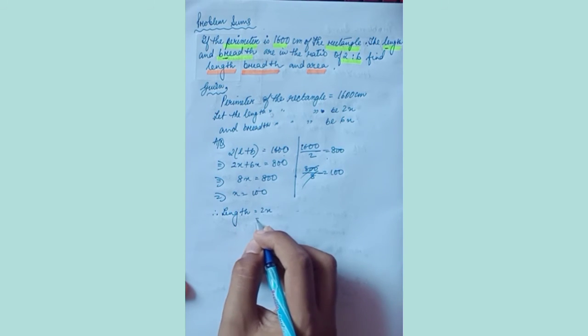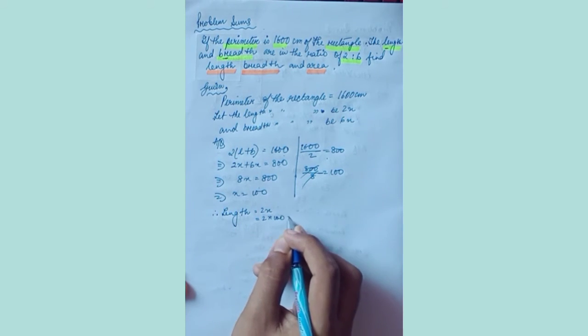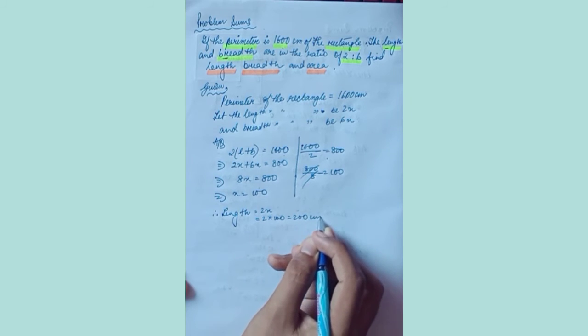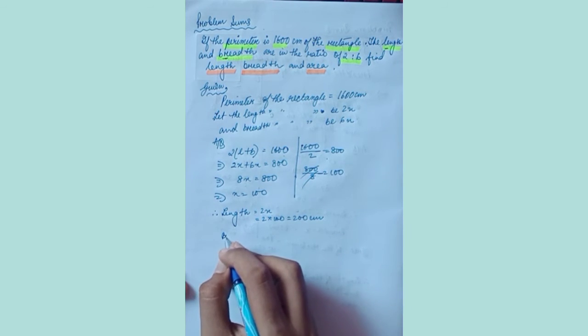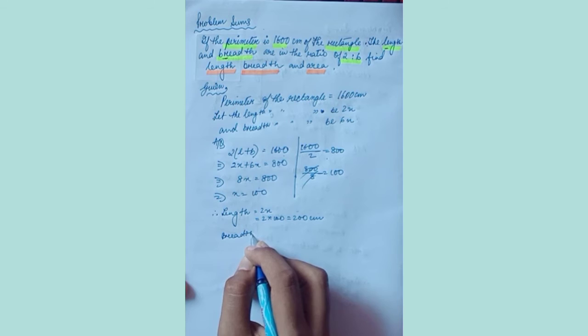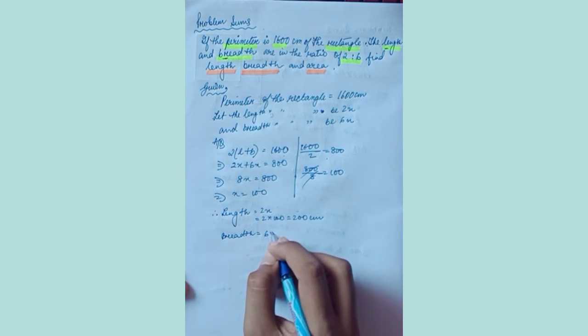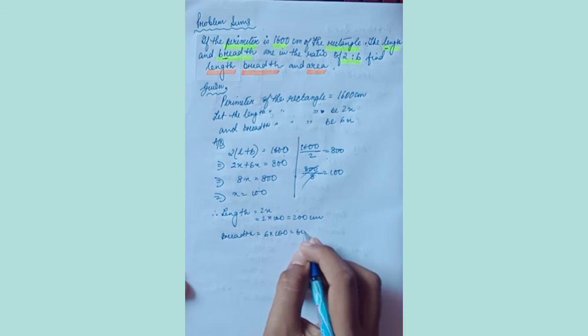Length is equal to 2x, which will be equal to 2 into 100, 200 centimeters. Breadth, which will be equal to 6 into 100, which will give you 600 centimeters.